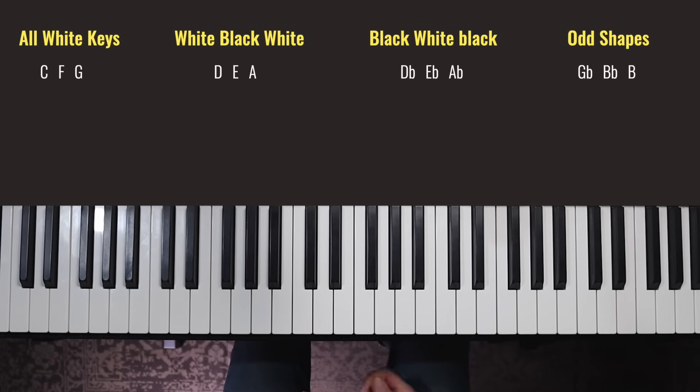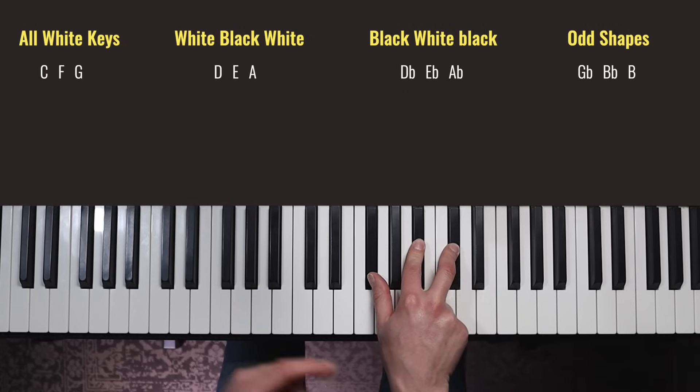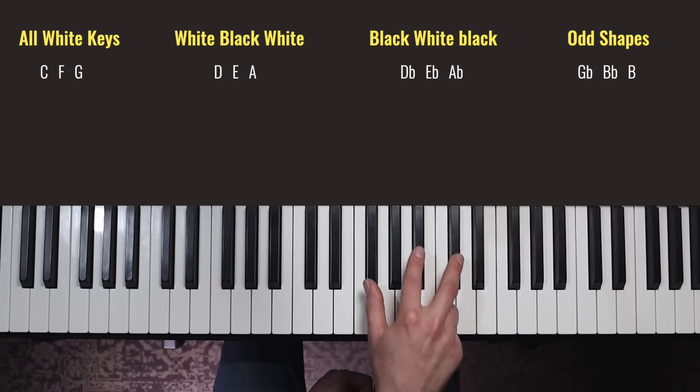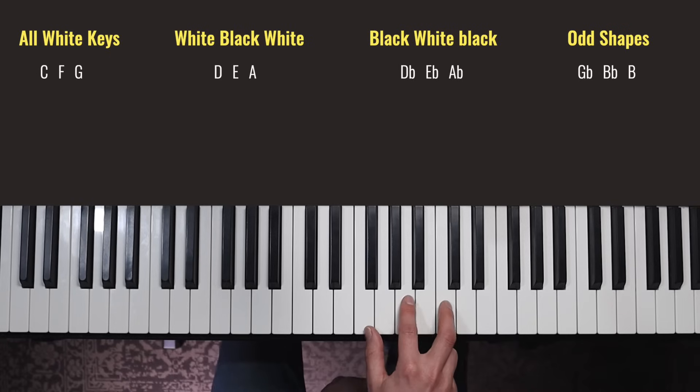And the last group then is three chords that all have unique shapes. This is the only major chord that only has black notes in it. So we could either call that G flat major or F sharp major. If we call it G flat major, imagine a G being flattened like that. If we call it F sharp major, imagine an F being sharpened.